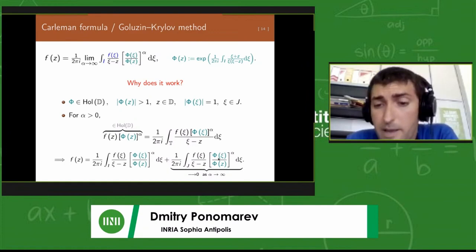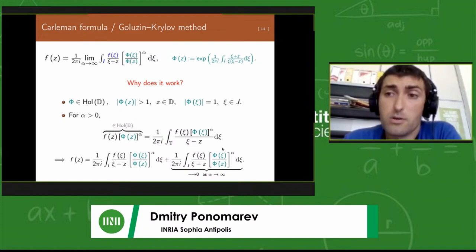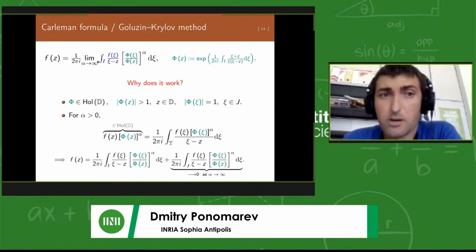Then we divide over phi to the power alpha both sides and split the integration into i and j parts. Now these important properties that we demonstrated above, that absolute value of phi(z) is bigger than one and phi(psi) along psi is equal to one, they come into play.